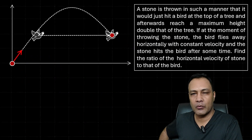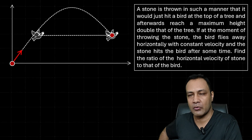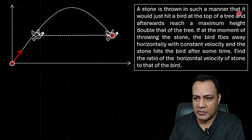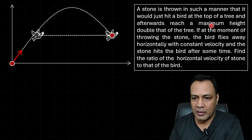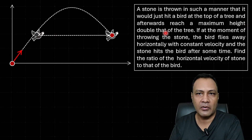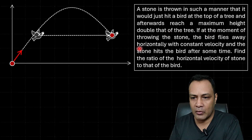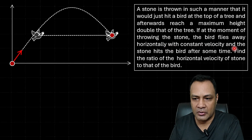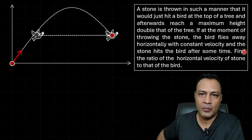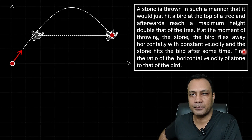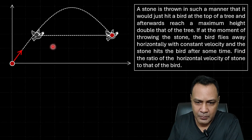This is a projectile motion problem from a resonance module. A stone is thrown such that it would just hit a bird at the top of a tree, and afterwards reach a maximum height double that of the tree. If at the moment of throwing, the bird flies away horizontally with constant velocity and the stone hits the bird after some time, find the ratio of the horizontal velocity of the stone to that of the bird.